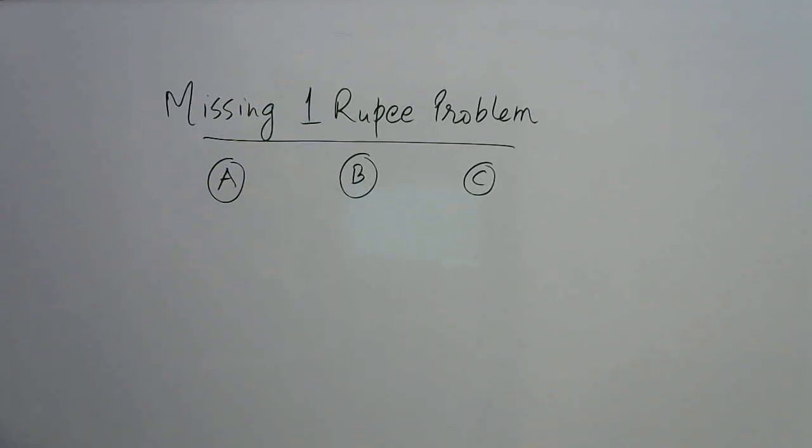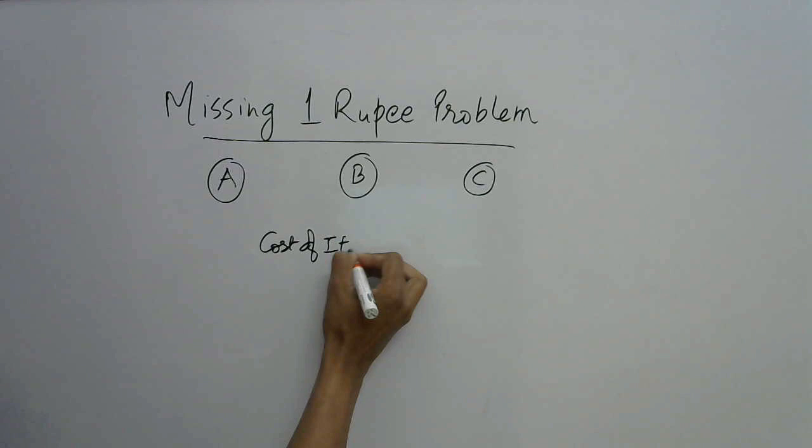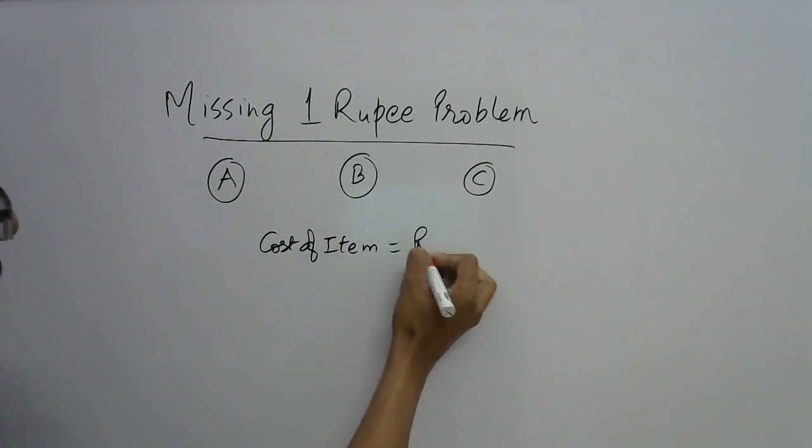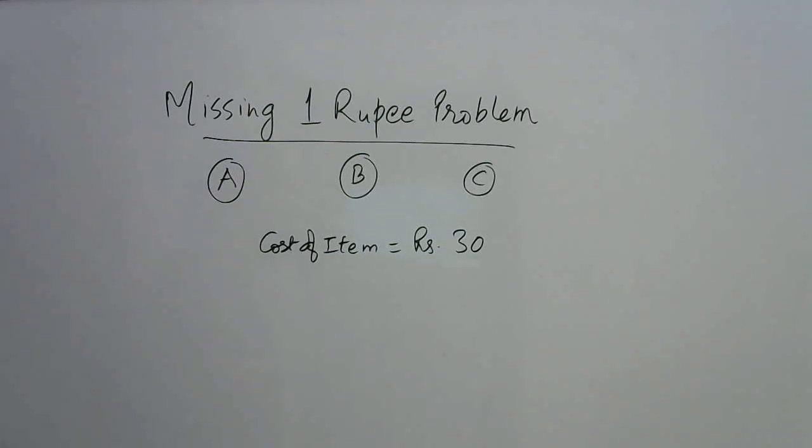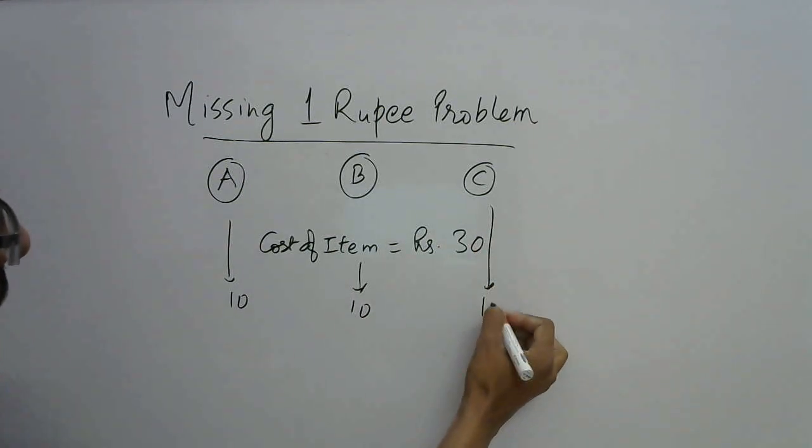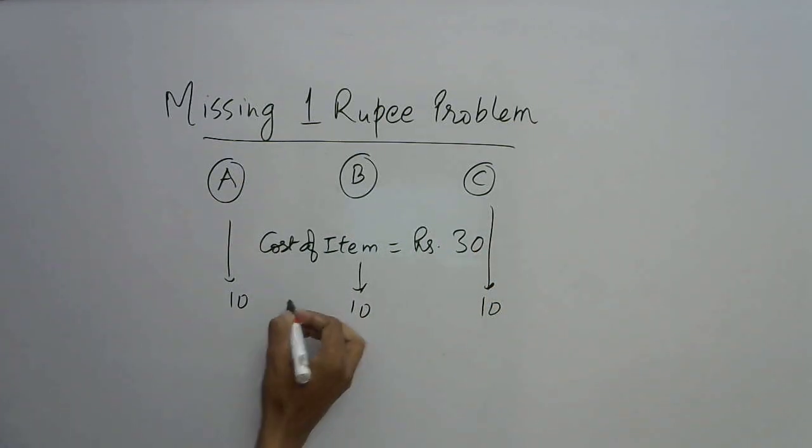So they went to a shop and the cost of the item is rupees 30. You can take anything 30 rupees. Each of them paid 10 rupees, 10 rupees, and 10 rupees, and obviously the total they paid was rupees 30 and purchased that item.